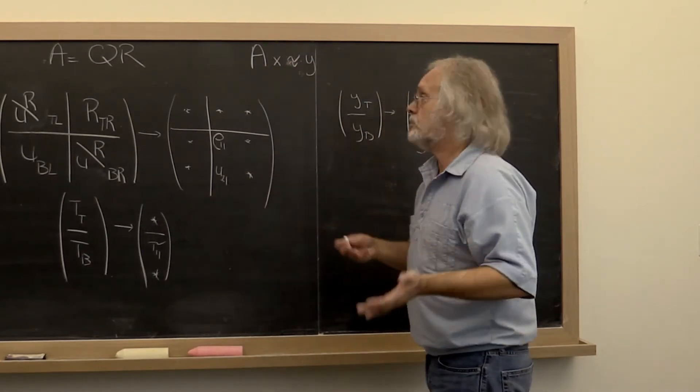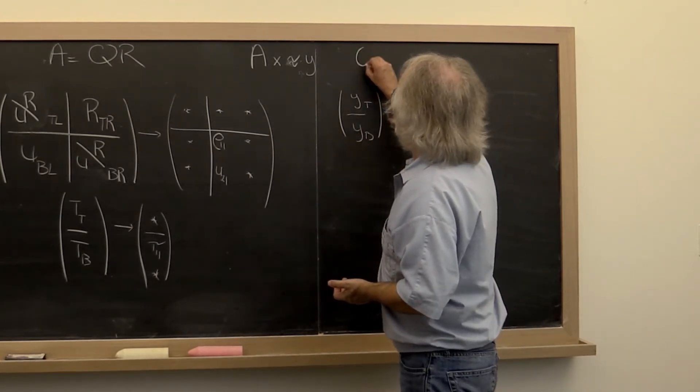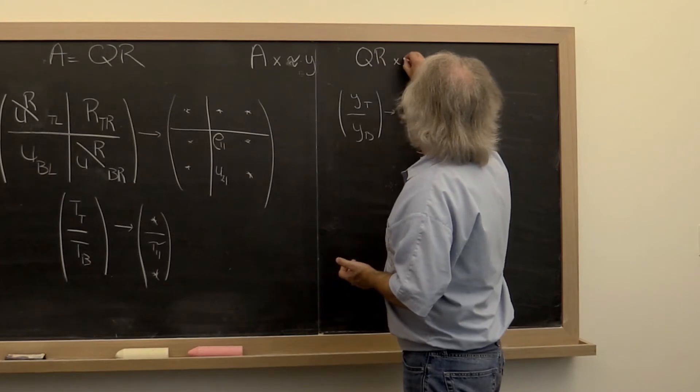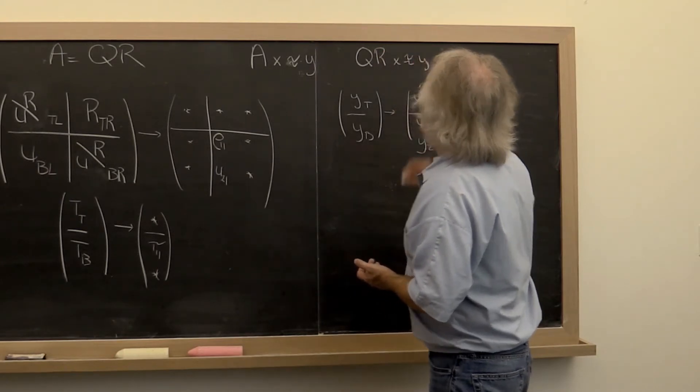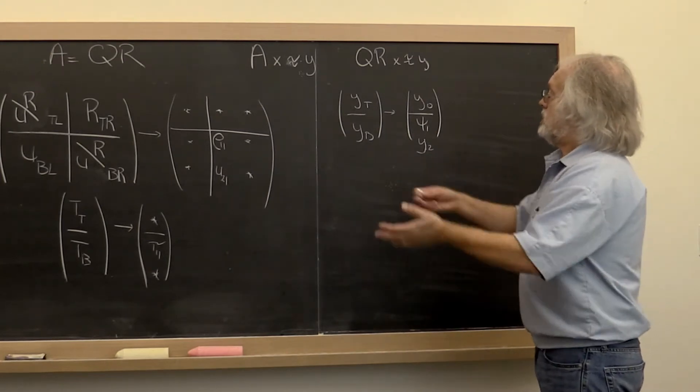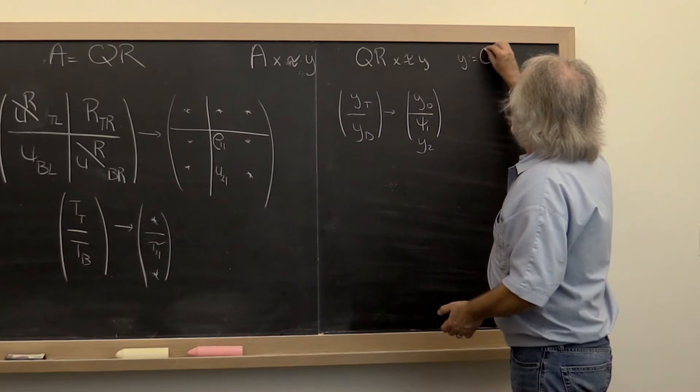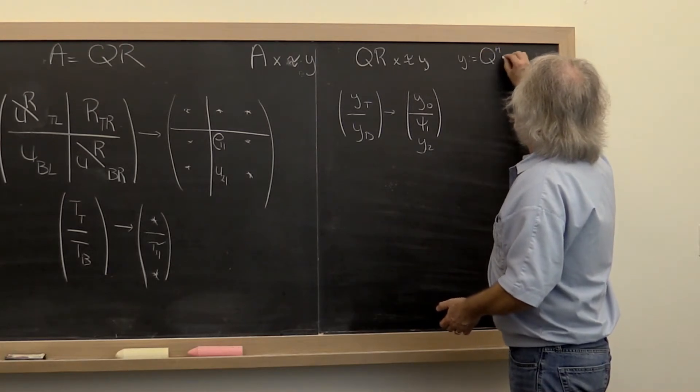A step in this process is to first compute the QR factorization. So then you end up with Q times R times x is approximately equal to y. And then subsequent to that, a step towards that is to say update y with Q Hermitian transpose times y.